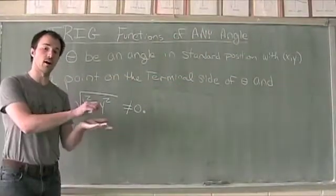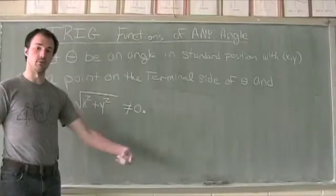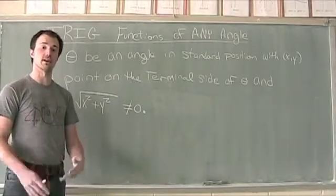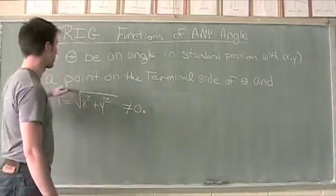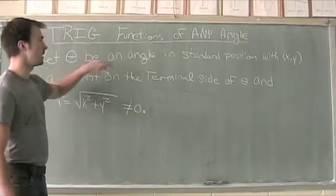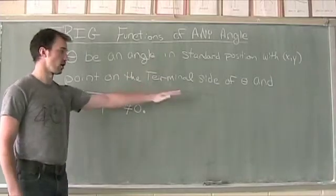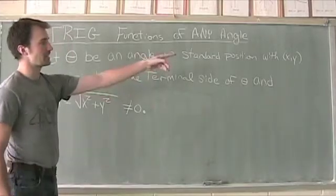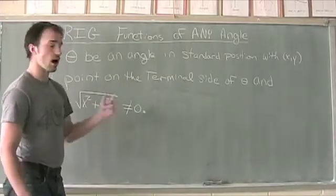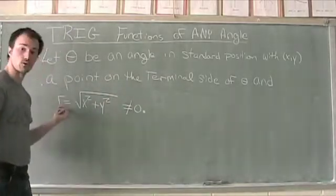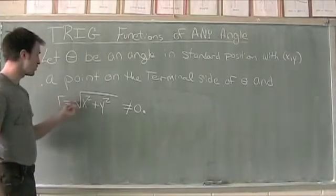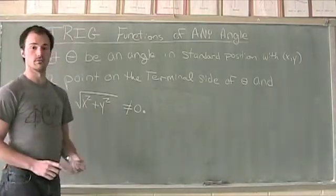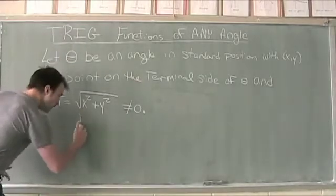We're expanding out of the first quadrant and now we're going to be able to move through all four quadrants and figure out the trigonometric values and ratios. Before we get there we need to look at a definition for working with these. We're going to let theta be an angle in standard position, meaning our initial side is on the x-axis going toward the positive side.